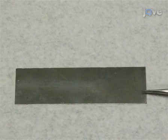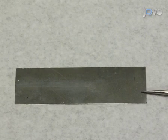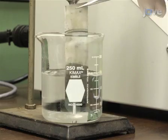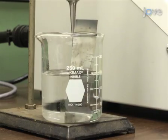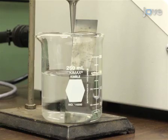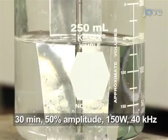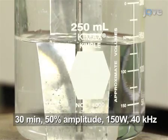Cut a 0.3 mm thickness molybdenum sheet into a 25 mm by 100 mm rectangle. Using an ultrasonic dismembrator with acetone and ethanol, remove the surface contamination for 30 minutes with a 50% sonicating amplitude, 150 W output power, and 40 kHz frequency.